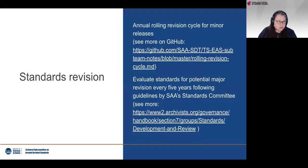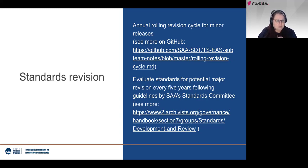So when it comes to standards revision, we are following a schedule where we have smaller minor releases every year, following a rolling revision cycle that is described on GitHub. But we also need to do, every five years following the SAA Standards Committee regulations, a major revision and look into things. And that is where we ended up.